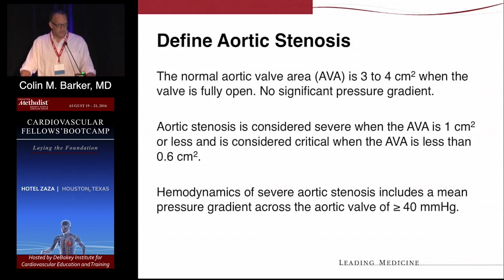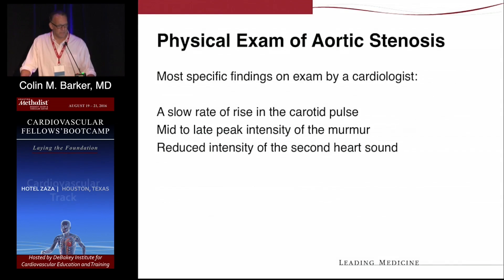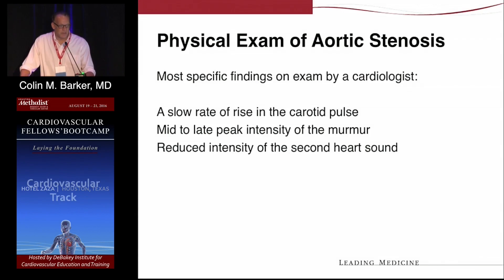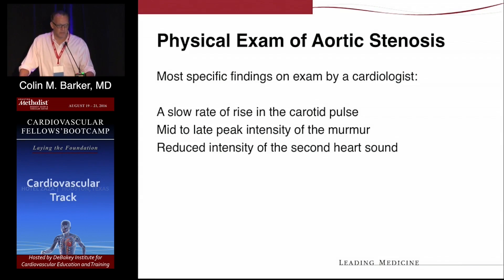Aortic stenosis is considered severe when the valve area is less than one centimeter squared, and critical when less than 0.6. The hemodynamics of severe AS include a mean gradient of greater than 40. On physical exam, which can still be very helpful — if someone has a really classic loud aortic stenosis murmur but comes back from the echo lab with a mean gradient of 20, you might question that echo finding and have them recheck the Doppler angle. The three findings are the slow rate of rise of the carotid pulse, the mid-to-late peak intensity of the murmur, and the reduced intensity of S2.